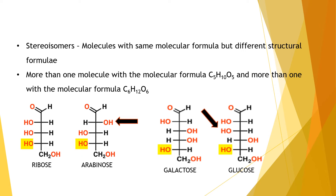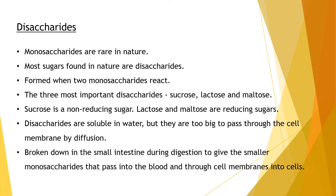Moving on to disaccharides: generally, monosaccharides are rare in nature, and most sugars found naturally are disaccharides. Disaccharides are formed when two monosaccharides react and interact with each other to form a product. There are three very important disaccharides: sucrose, lactose, and maltose. Sucrose is a non-reducing sugar, whereas lactose and maltose are reducing sugars.